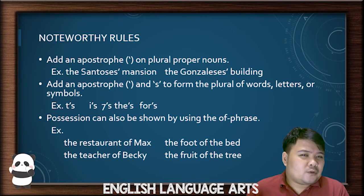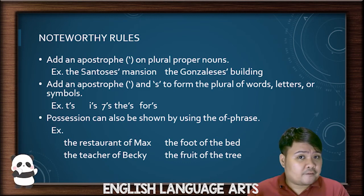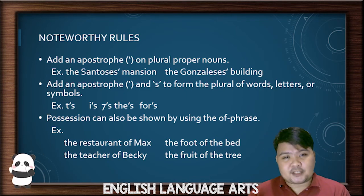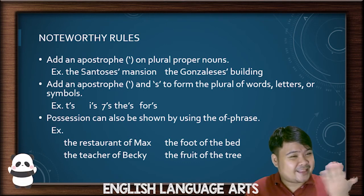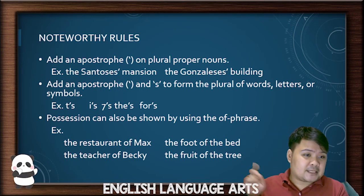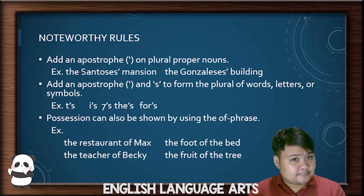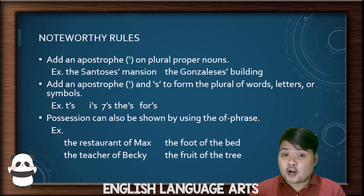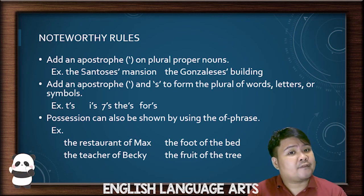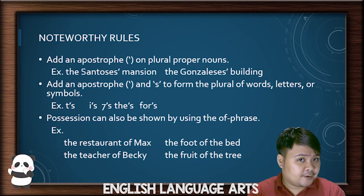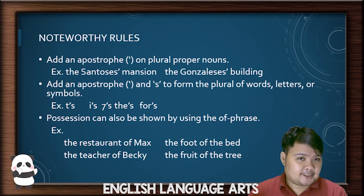You can also use the 'of phrase' to show possession. Unlike the apostrophe S form — where you start with the owner first, like Max's restaurant — in the of phrase, you start with the thing that is owned first. So instead of Max's restaurant, you say: the restaurant of Max. No apostrophe or S needed.